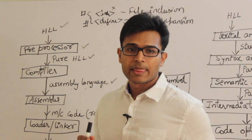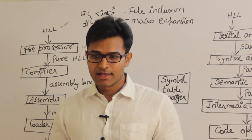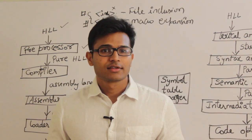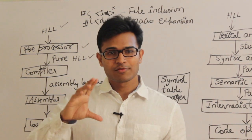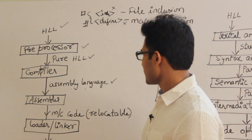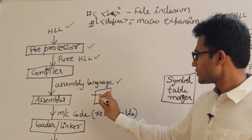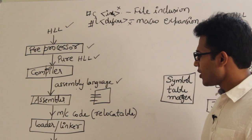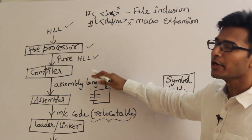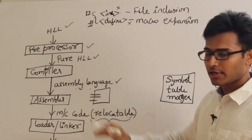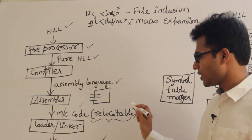Relocatable machine code means you can load that machine code at any point in the computer and you can run it. The compiler doesn't assume that you are going to run a program only from a particular memory location. In the RAM, the compiler assumes you can start from any point. Therefore all the addresses within the program will cooperate for program movement while running. Loader and linker will take the relocatable machine code and convert it into absolute code.